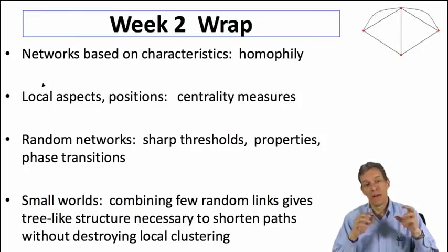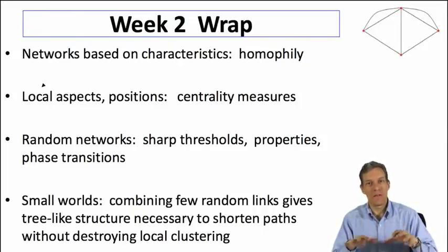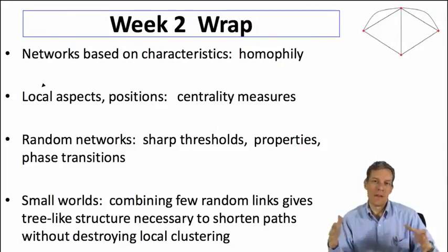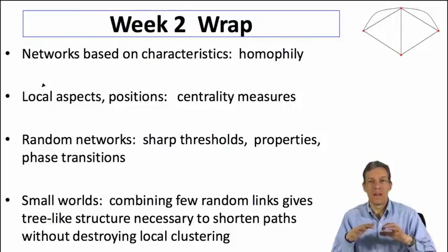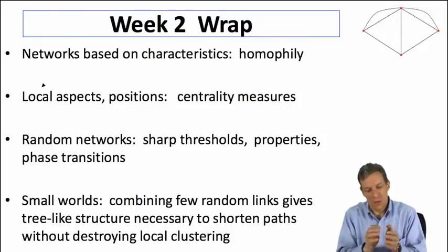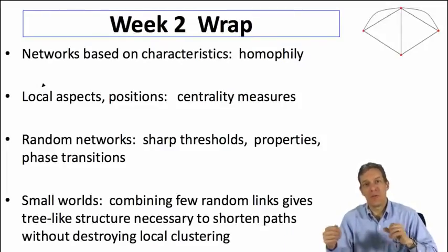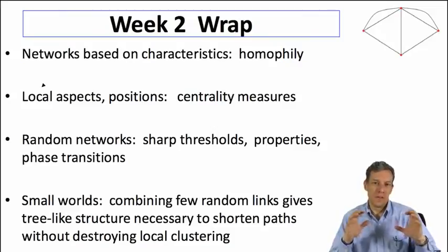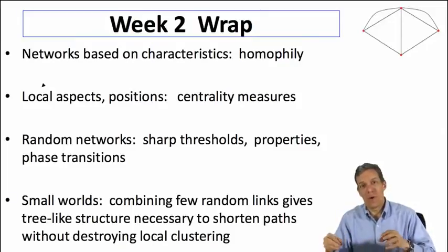The last point we looked at was small worlds. This brought back the idea that a relatively small amount of tree structure — from putting down a few random links — when combined with something that has high clustering, can give you two of the important features we've seen in networks: strong local connectedness and easy-to-reach-across-the-network properties. These are simple explanations for what we might be observing.